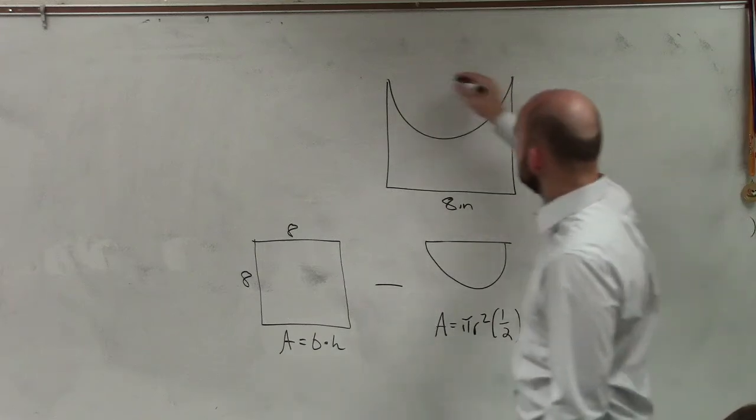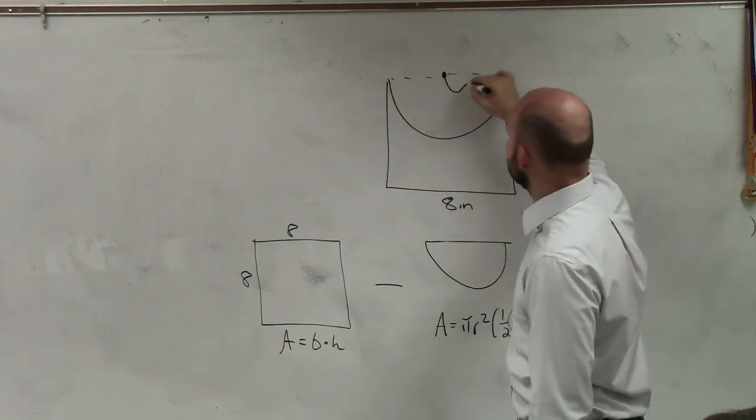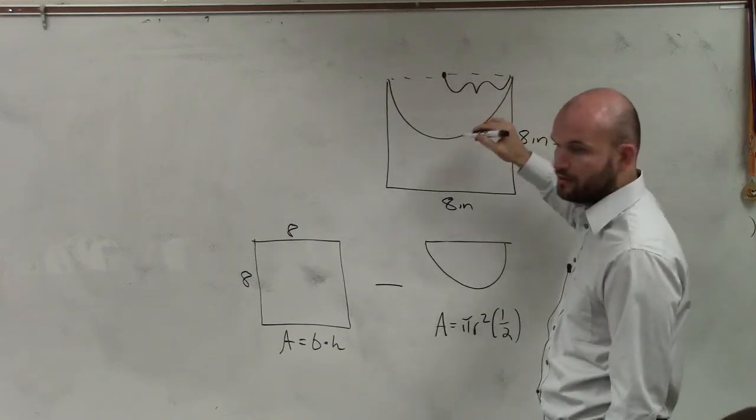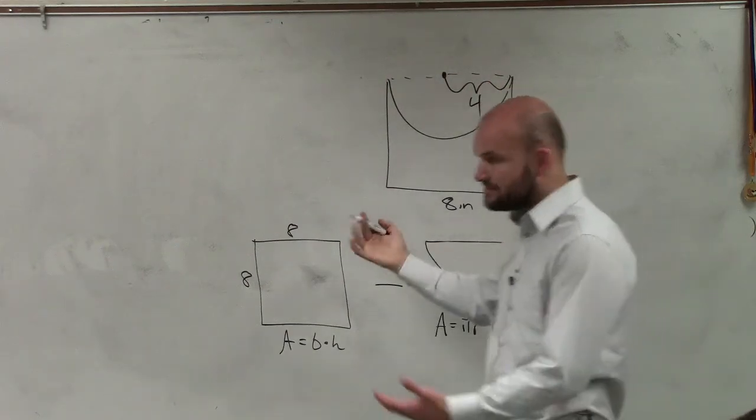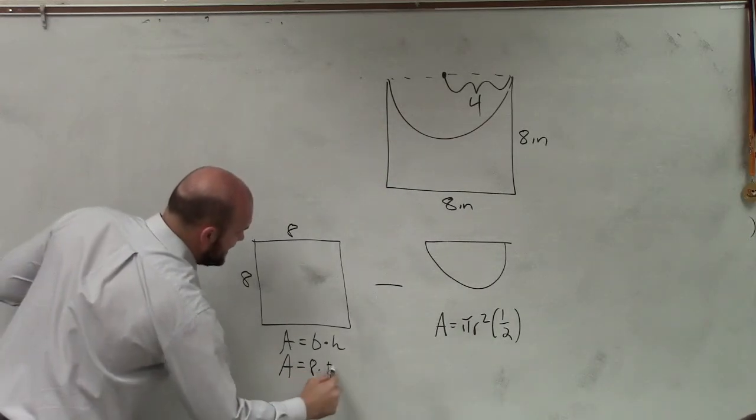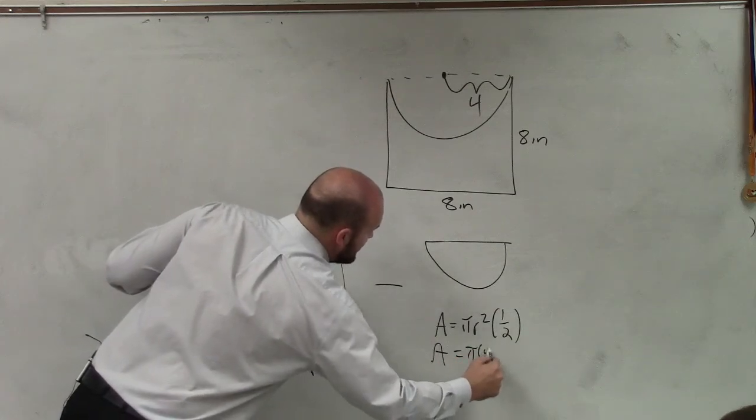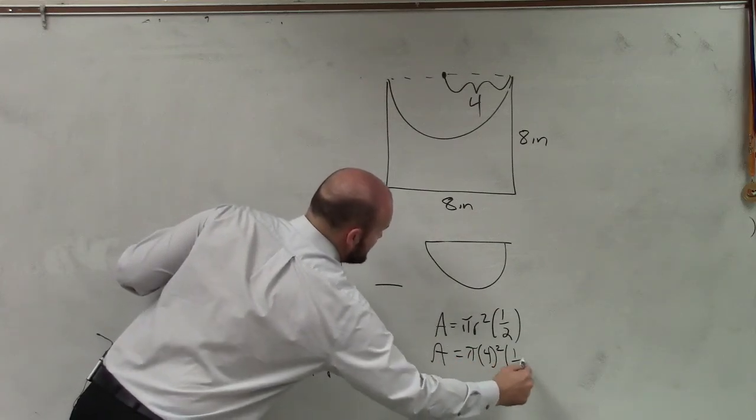Now notice that the center would be right here. If the whole distance is 8, the distance of my radius would be 4. So now I'm just going to plug in these values. Area equals 8 times 8. This area equals π times 4² times 1/2.